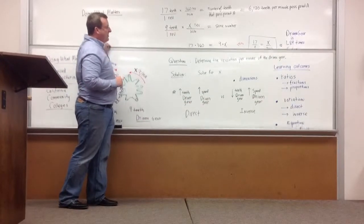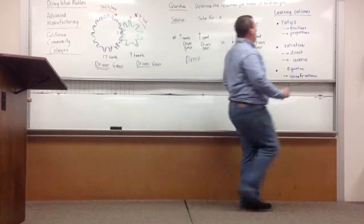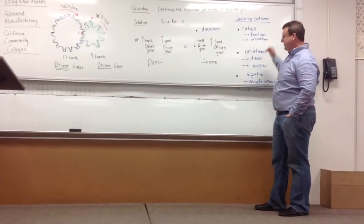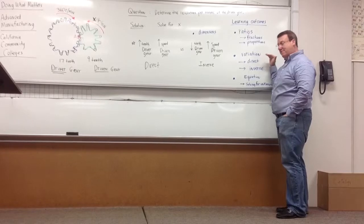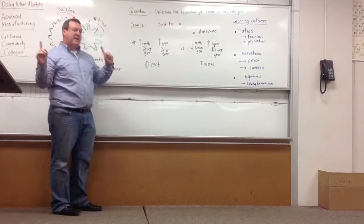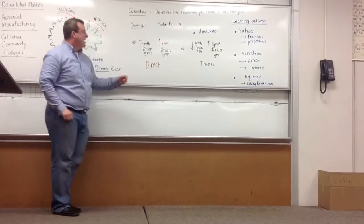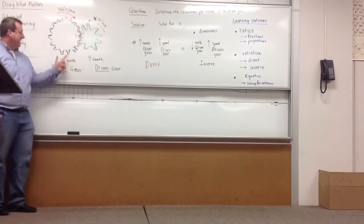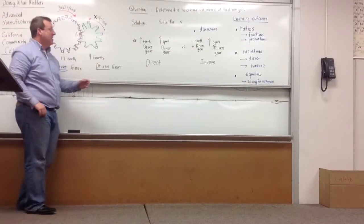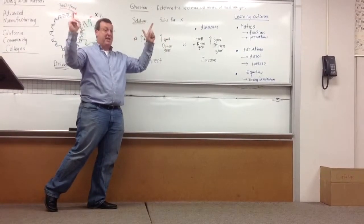I want to come back up here and hit a couple more points. We have some learning outcomes. We just talked about ratios, the dreaded fraction word, and proportions. I want to talk about this concept of variation. They consider direct variation when one variable goes up and the other variable goes up. So in this question, if we increase the number of teeth in the driver gear, if that went up to 18 teeth, all things being equal, then the speed of the driven gear would have to go up. That's a direct relationship.